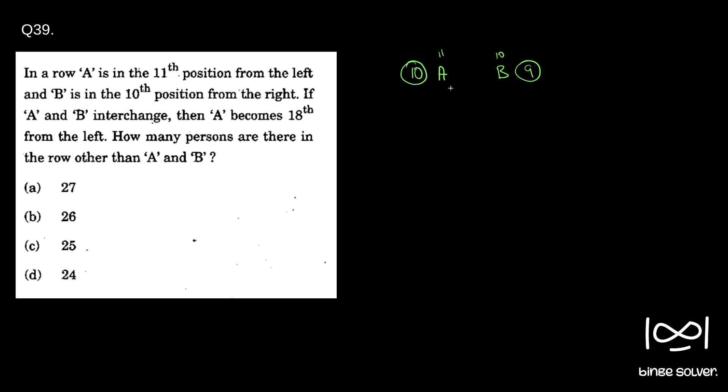10th and 11th, okay. Now if A and B interchange, so B takes A's position. Let's write B here. So there are 10 people behind B now. Then A, there are 9 people behind A and B interchanged.